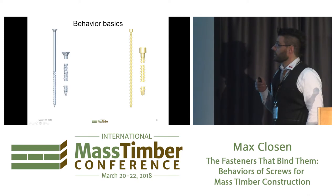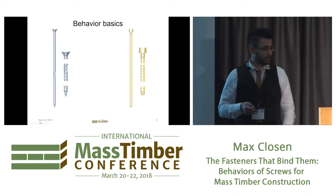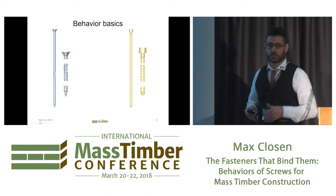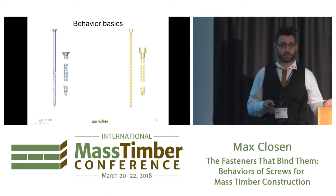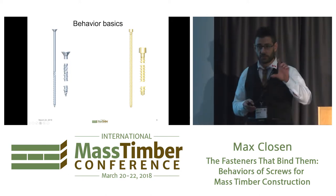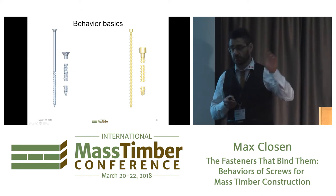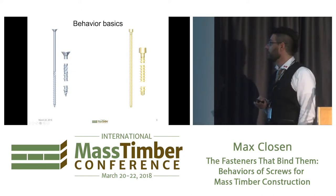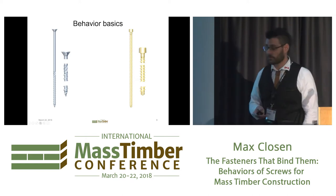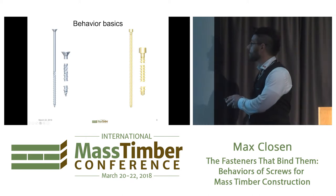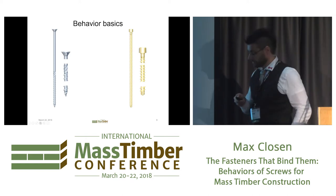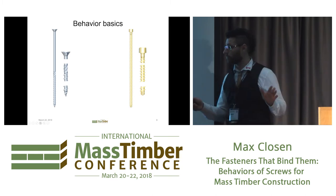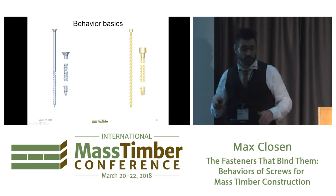To get started, we need to understand a few basic things. We have two basic screw types that you find in the industry. One is a partially threaded wood screw - to your left - where the threads extend along a portion of the wood screw, typically between 30 and 50 percent. To the right is a fully threaded wood screw where the threads go from the very tip to the very head. Those two are entirely different performing fasteners that we need to note.